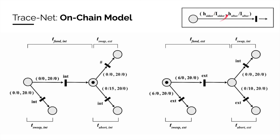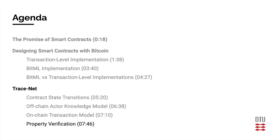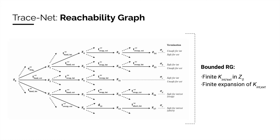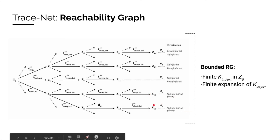I_older represents the minimum age of the output, and I_after represents the minimum block height after which the transaction can fire. Given the initial state of the contract — consisting of actor knowledge and the on-chain model — we can now unfold the Tracenet into a reachability graph featuring the transition types previously introduced. This reachability graph must be finite due to bounded knowledge and knowledge expansion. We can now check this graph for trace properties of interest.